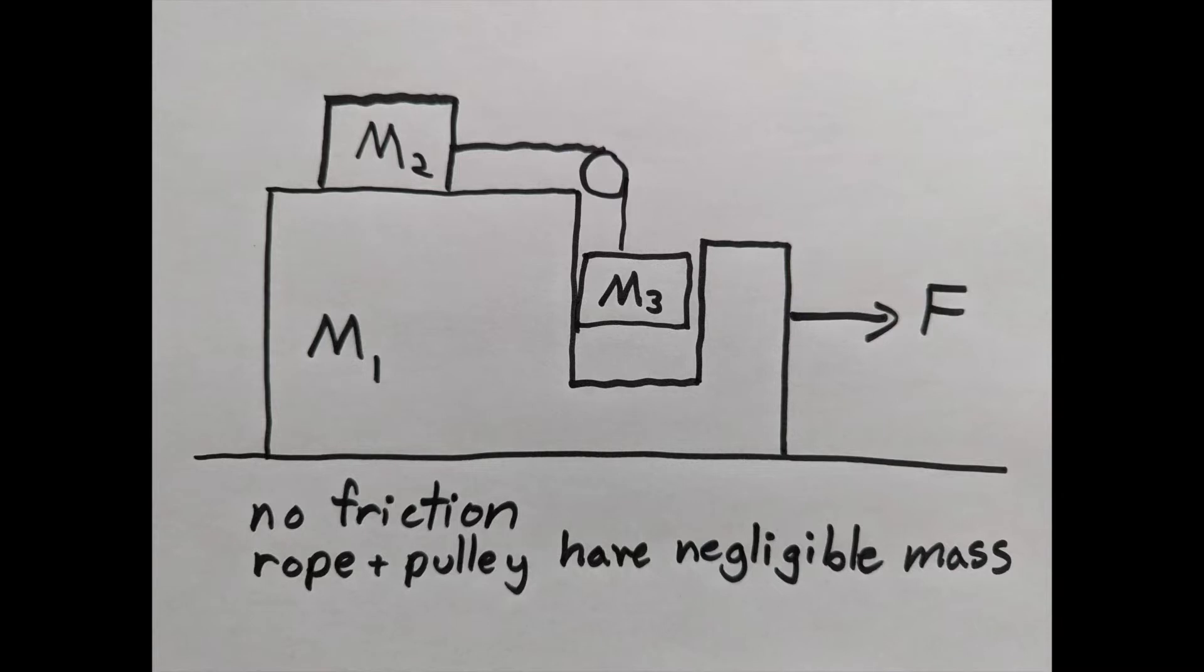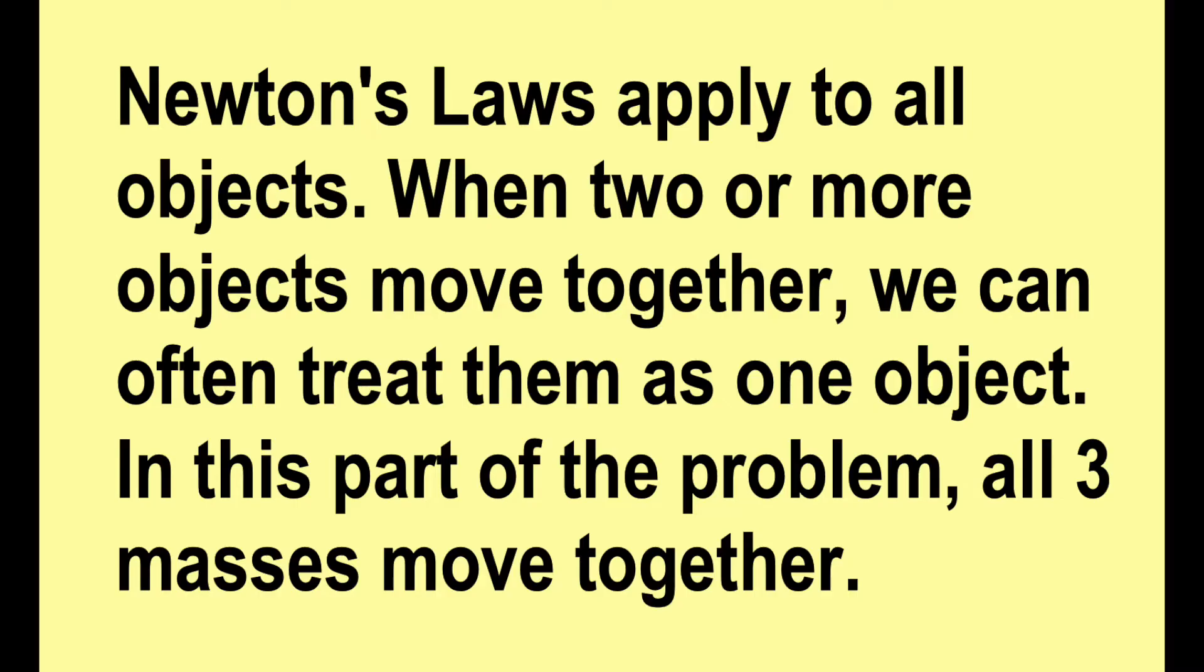So to solve this problem, what objects are we going to take and use F equals ma on? The obvious choices are m1, m2, m3, but we also could possibly use a combination. Newton's laws apply to all objects. When two or more objects move together, we can often treat them as a single object. In this part of the problem, all three masses move together. So we have a lot of options.